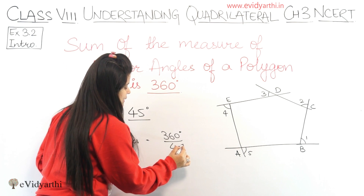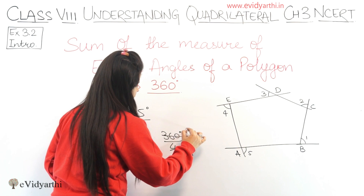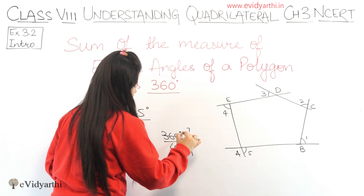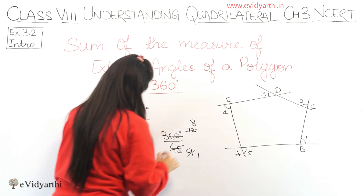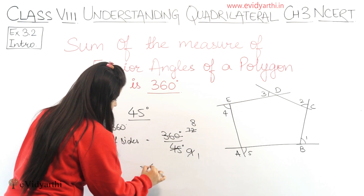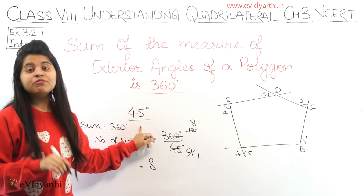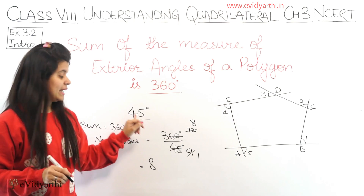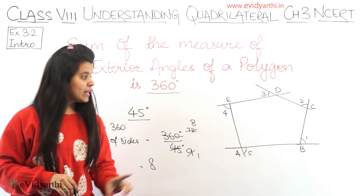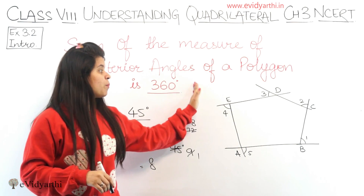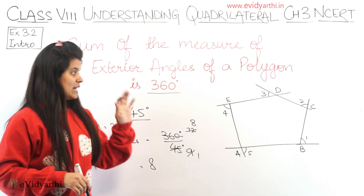So, isko hum calculate karenge. 360 divided by 45 will be 8. So this means ke aisa polygon jiske exterior angles 45 degrees ke hain, uski number of sides hogi 8. Okay? So, is property ki help se hamein polygon ki number of sides bhi find kar sakti hain.